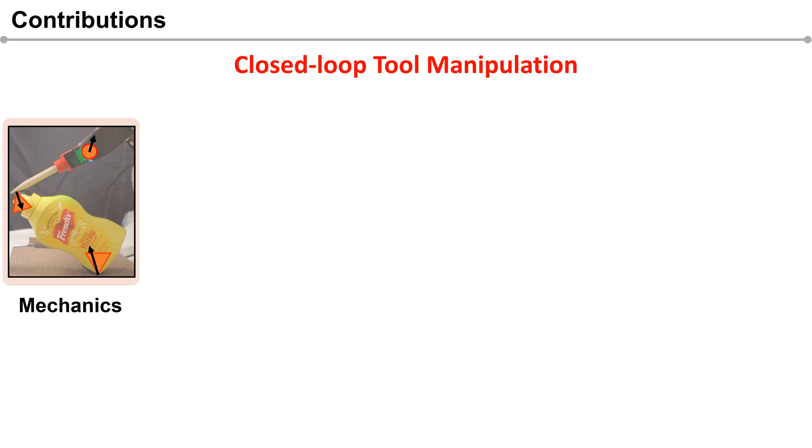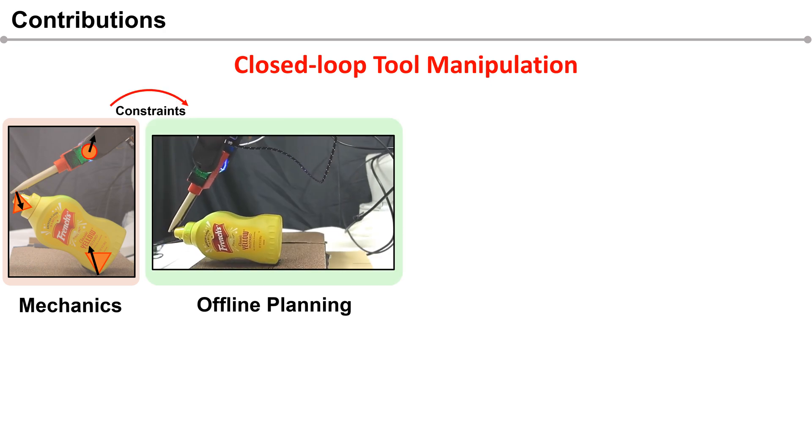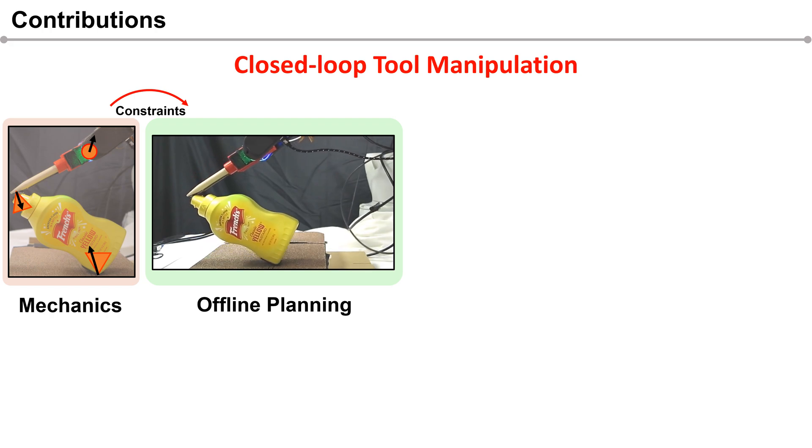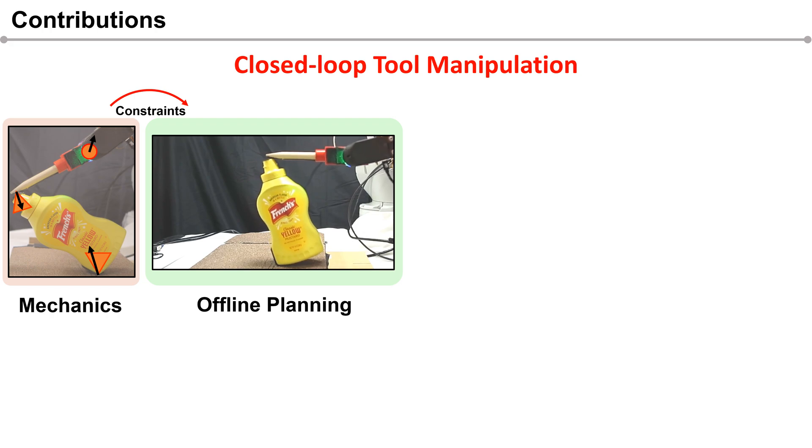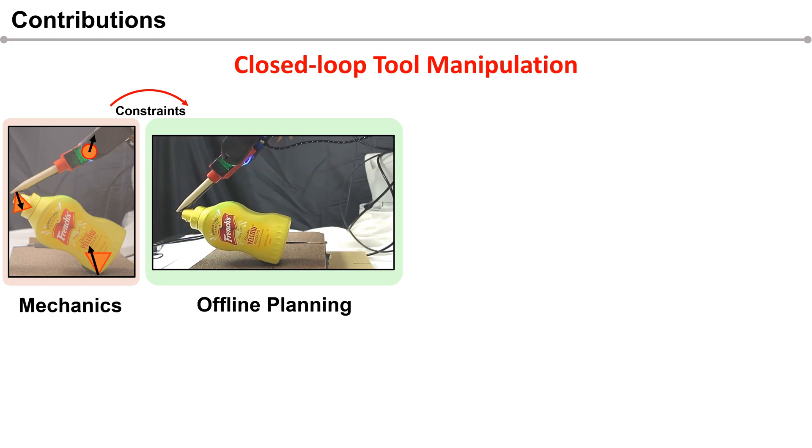We present analysis of mechanics of tool manipulation, which provides the planner with physical constraints. Then we perform trajectory optimization to find the optimal trajectory for the object, tool, and end effector simultaneously.